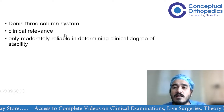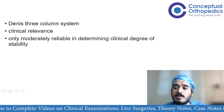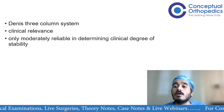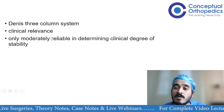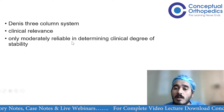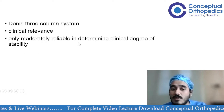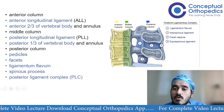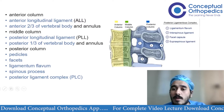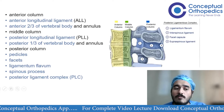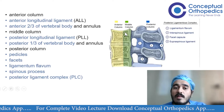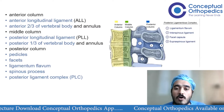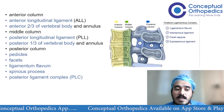Dennis's three column system had significant clinical relevance when initially designed because it was easy and convenient to identify the three columns. However, over time it was seen to be only moderately reliable in determining whether an injury is stable or not. The spine is divided into anterior, middle, and posterior columns. The anterior column comprises the anterior longitudinal ligament, the anterior two-thirds of the vertebral body, and the annulus.